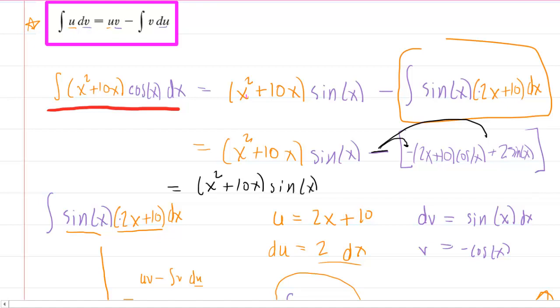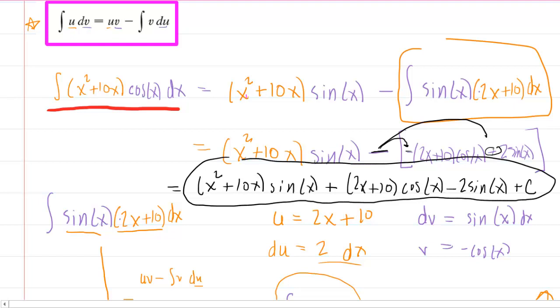Notice here you're going to have a minus and a minus, so that's going to become plus 2x + 10 times the cosine of x. And then when you distribute the minus sign over to this plus sign right here, we end up with a minus 2 sine of x. And then we add the constant of integration, so plus C. This right here will be the final answer to the question.